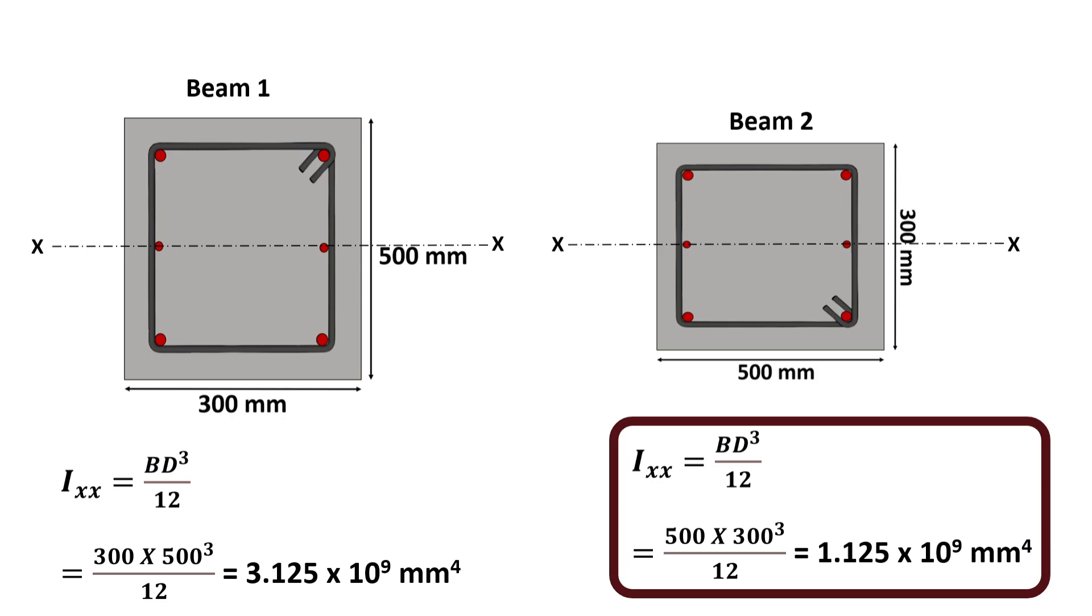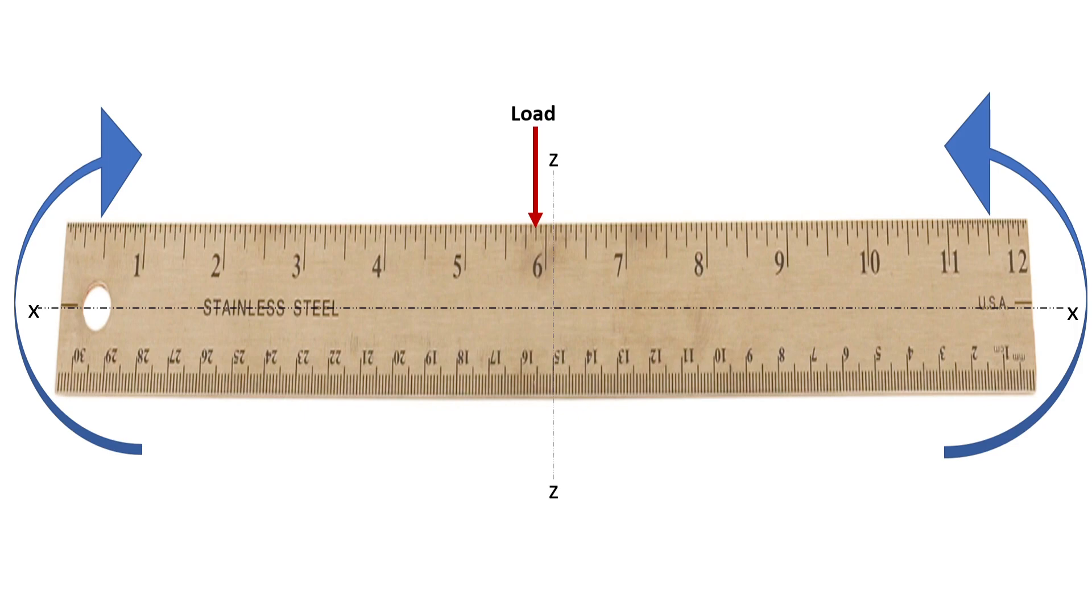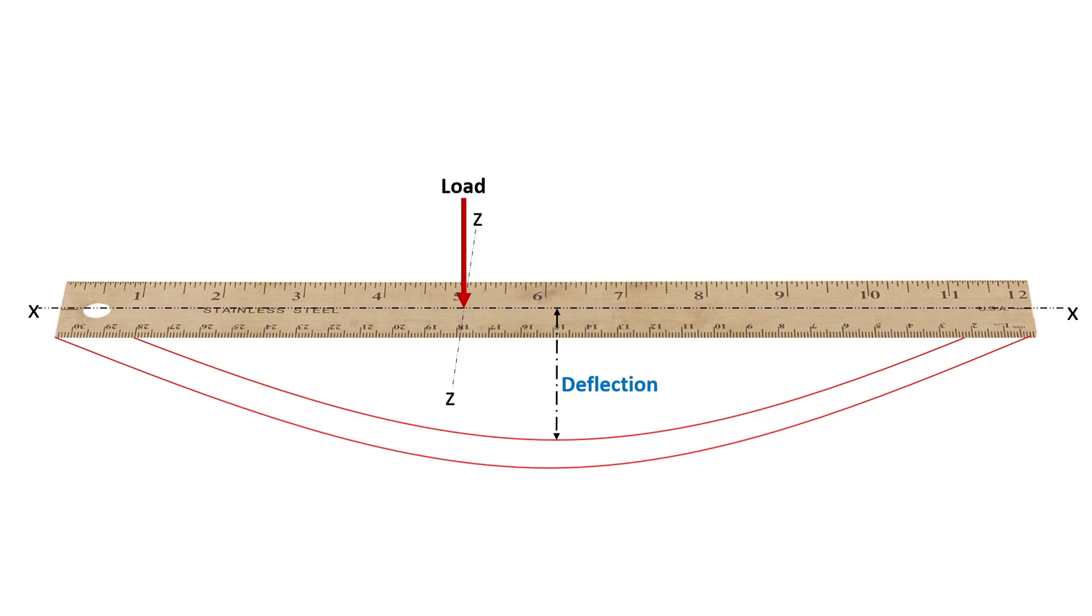To make it more practical, let's consider a measuring scale. If you try to bend the scale with the width in the vertical position, you will find it difficult to bend and any bending that occurs will be minimal. However, if you turn the scale with the width in the horizontal plane and try to bend it, you will be able to deflect it easily until it breaks.